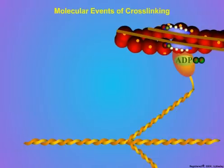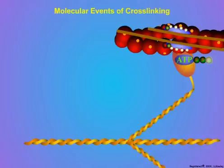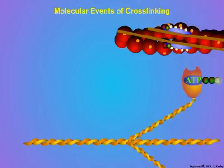After pulling the actin, myosin exchanges ADP for a new molecule of ATP. This results in release of the myosin head from the actin. The myosin head resumes its relaxed conformation and position, and the cycle is ready to repeat. Let us watch the cycle repeat several times.